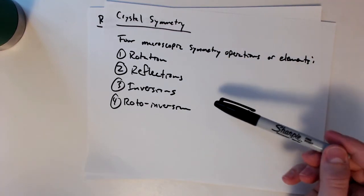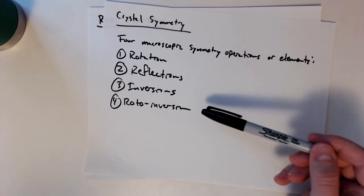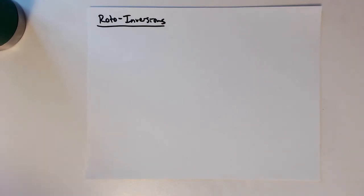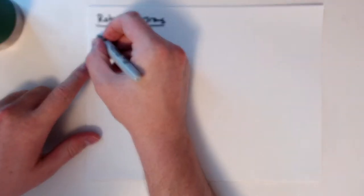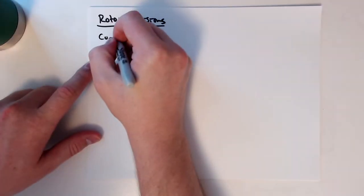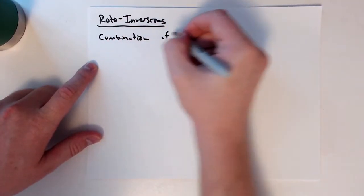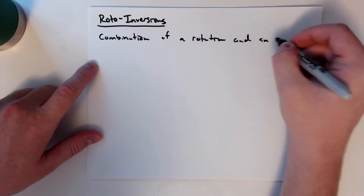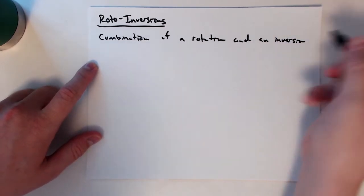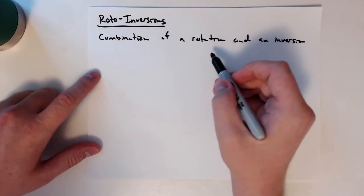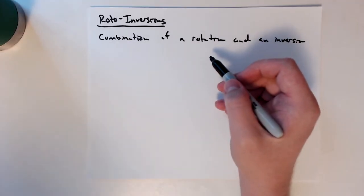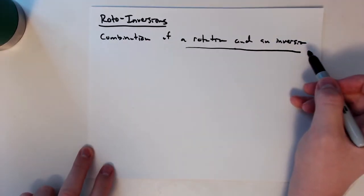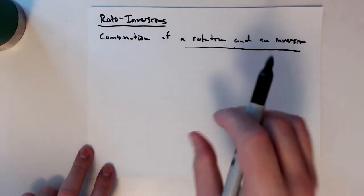Of the last four macroscopic symmetry operations, we're going to talk about rotoinversions. So as you might imagine from the name, it's a combination of a rotation and an inversion. The important thing to note here is that when we're talking about a single symmetry operation, since this is a rotoinversion, it has to have both the rotation and the inversion — we're not separating them out in the individual operation.